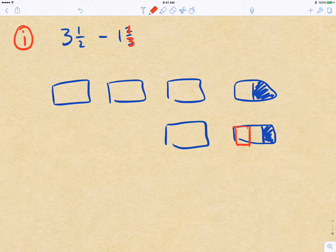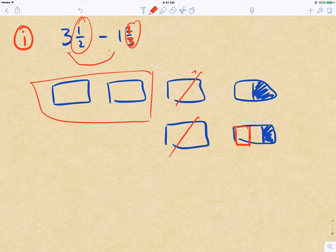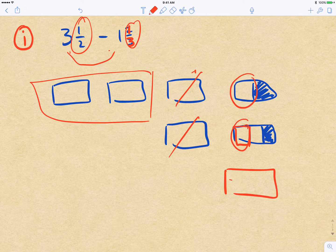It would be much easier to do this problem without worrying about improper fractions because we'd just have the 3 minus the 1, and then so that would be 2. So it leaves us with those two there. And then we can do the ½ minus ⅓.